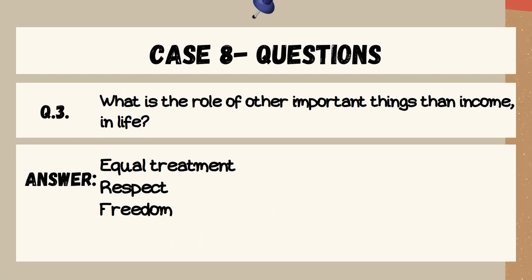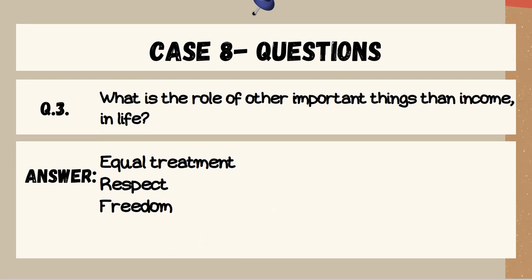Third part says what is the role of other important things than income in life? Equal treatment, respect and freedom.